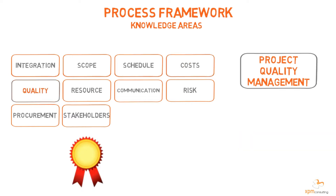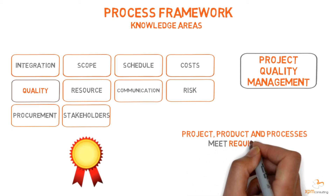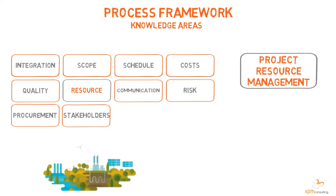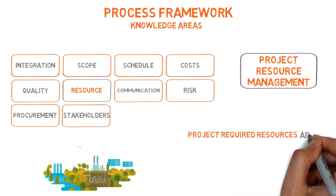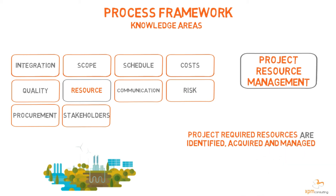Project Quality Management ensures that the project, the product, and the adopted processes meet requirements. Project Resource Management ensures that the project's required resources are identified, acquired, and managed throughout the project.